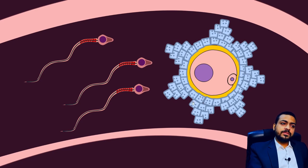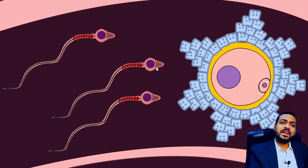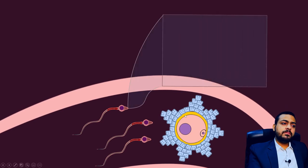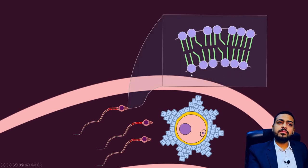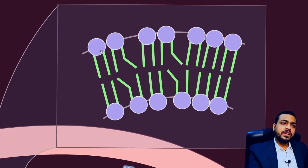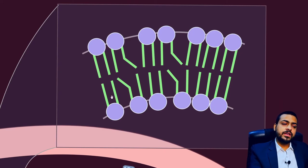How can it pass through the corona radiata cells? It has special molecular cutters packed in the acrosome, and at this point it can release those cutters to disperse these cells. At this point the sperm membrane is quite unstable, but it is not always unstable. How is it unstable? The normal structure of the cell membrane is a lipid bilayer composed of phospholipids — two layers with their hydrophobic fatty acid tails arranged inside and the polar phosphate heads on the outer side.